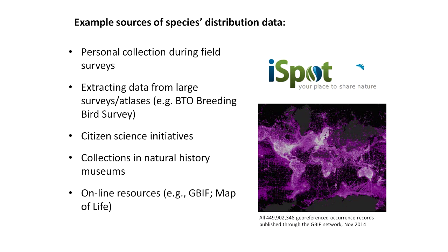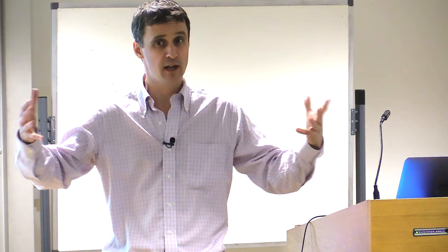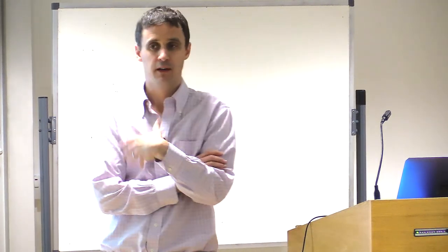Here are some example sources of species distribution data. These are the classic cases where you're interested in a particular region or a particular species — how do you go about getting some records? One of the classics is you go out and collect some data yourself. A lot of PhDs have a fieldwork component where you're actually in the field collecting your own data, and that's very cool. A difficulty is that within the scope of a PhD, you're not necessarily collecting the kind of quantity of macroecological, large-scale biogeographic data that we might need to run these kinds of models.